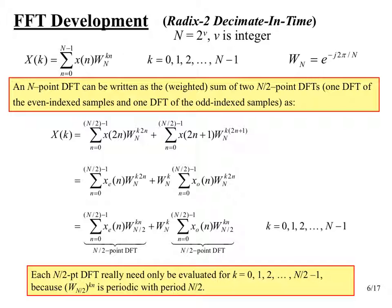We're going to develop the FFT in a very specific form called radix-2 decimation in time. Radix-2 basically means the number of samples we're processing — including any zero padding — is a power of two. That's where the radix-2 comes from. The decimation in time will come from how we break the problem down, and I'll point that out as we go.